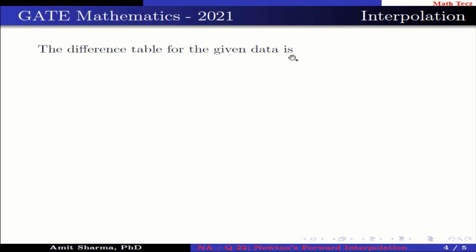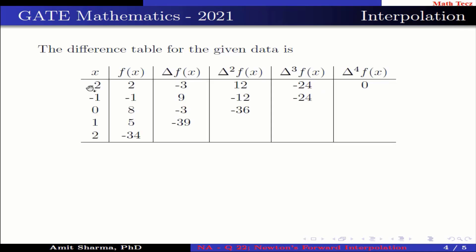The difference table for the given data is: x = -2, -1, 0, 1, 2 with f(x) = 2, -1, 8, 5, -34. Δf(x): -3, 9, -3, -39. Δ²f(x): 12, -12, -36. Δ³f(x): -24, -24. Δ⁴f(x): -24 - (-24) = 0.